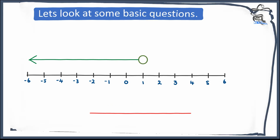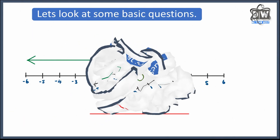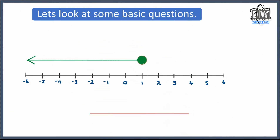Let's have another one — the exact same question but this time the circle is shaded in. So now it's shaded in: x is smaller than or equal to 1. Because it could be 0, minus 1, minus 2, minus 3, minus 4, minus 5, minus 6 and beyond the number line, because there is no stopping point there.